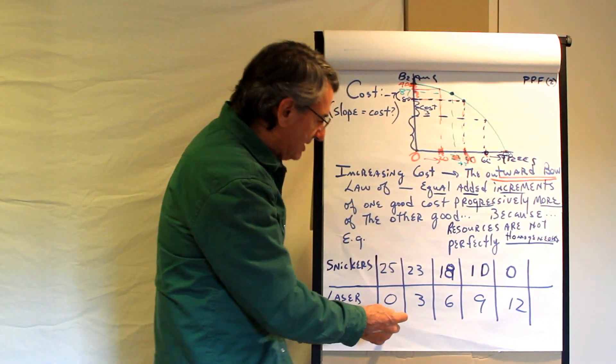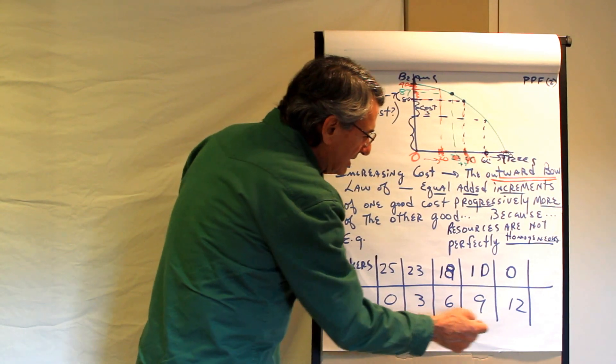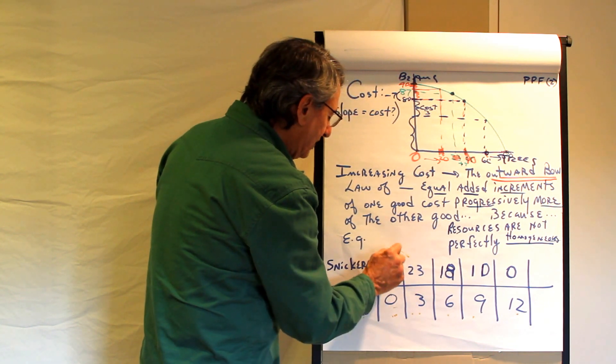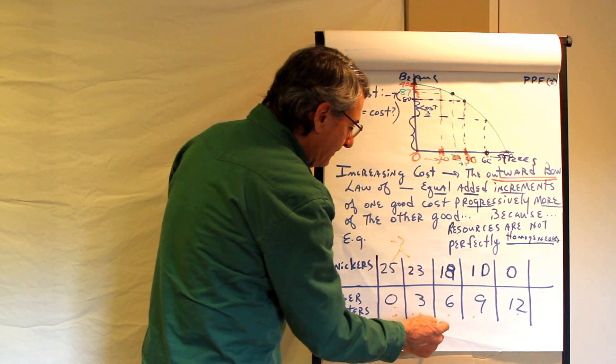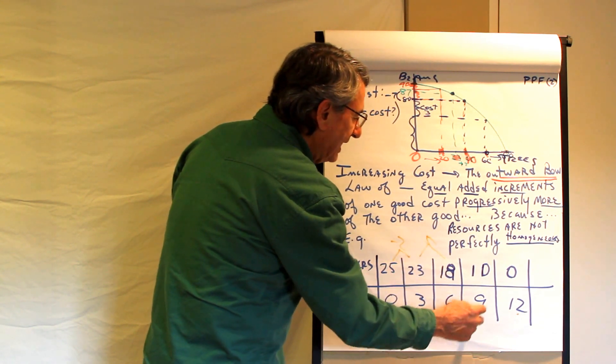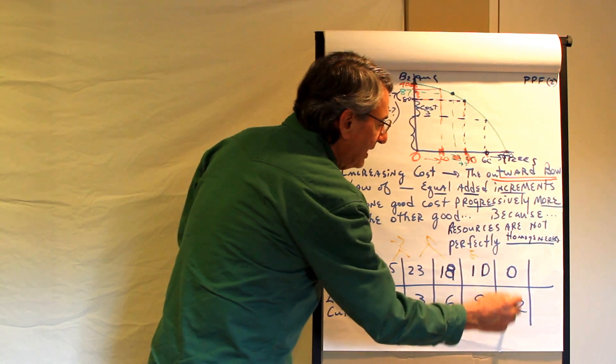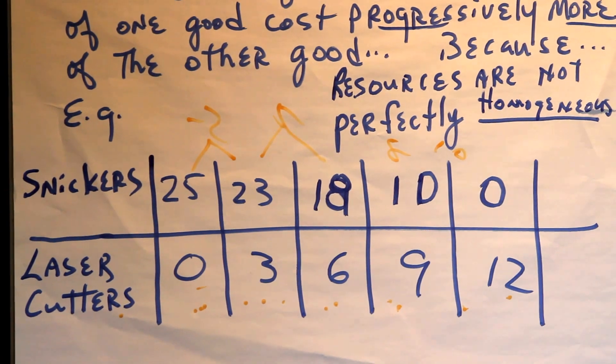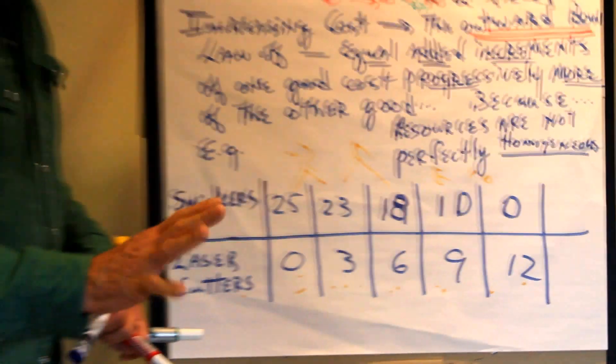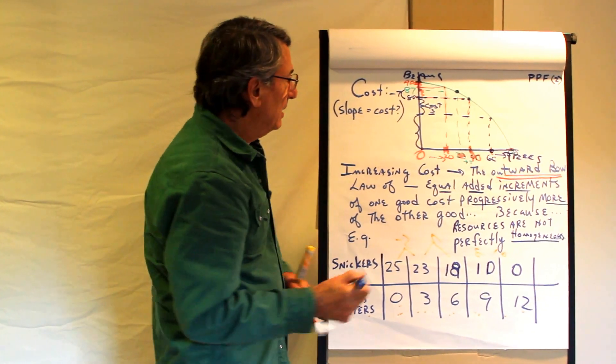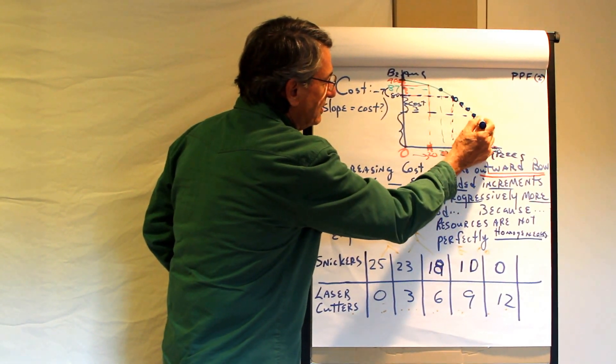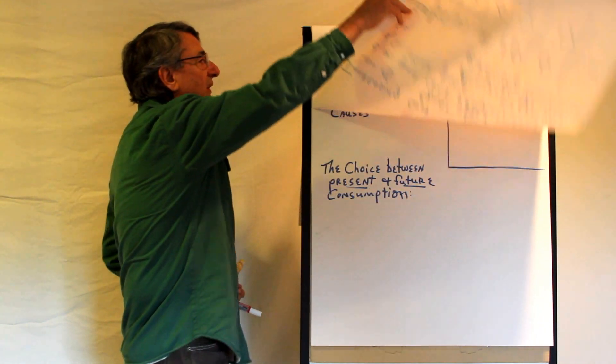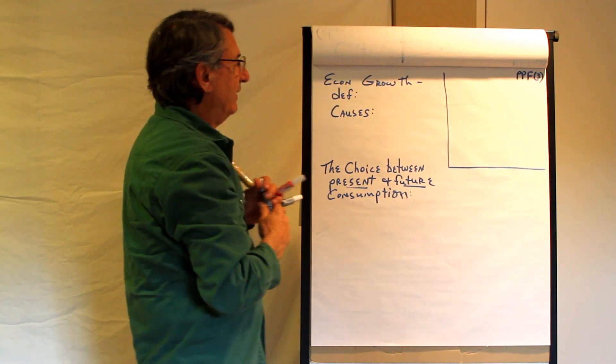So we can show costs here. Each time we're increasing the production of laser cutters by three units. The cost of the first three units is two units of Snickers bars. The next three cost us five. The next three cost us eight. And the last three cost us ten units of Snickers. So there are increasing costs. And that's because resources are not perfectly shiftable between different uses. You tend to get the most out here where each resource gets to do what it does best. So that's limits, efficiency, cost, law of increasing costs.